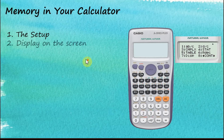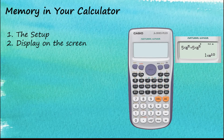The second type of memory in your calculator is what is displayed on the screen. If you key in something on the screen, as long as you do not delete it or switch off the calculator, those things on the screen will be kept in the memory of the calculator. This is the second type of memory.